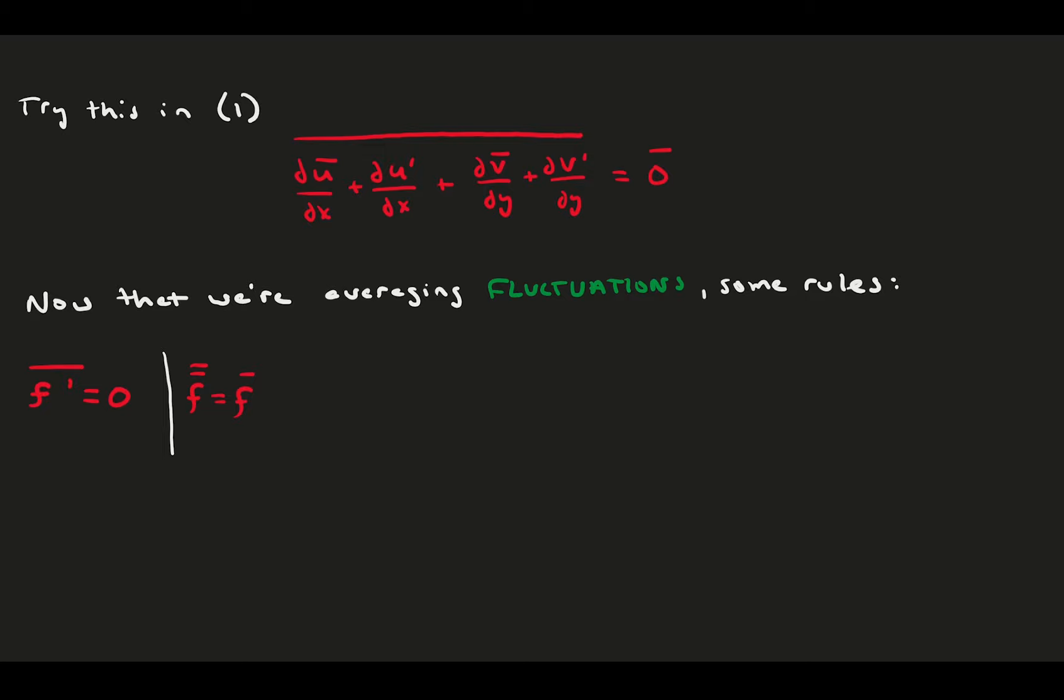Second, taking the time average twice is the same as the time average once. Third, you can bring a time average into a sum with no problems, and you can also bring them into products of a mean and a fluctuation. This last part's important. You cannot bring them into all products, as we'll see later, but it's okay to do if one of the terms is an average quantity. Lastly, you can bring the averages inside derivatives and inside integrals.